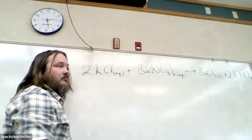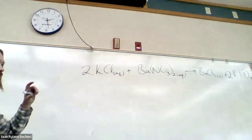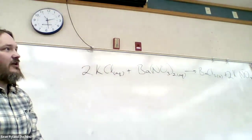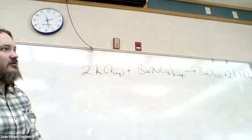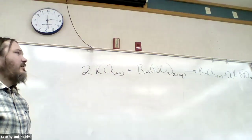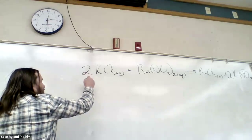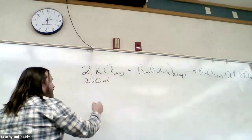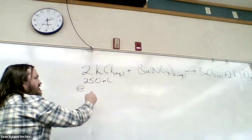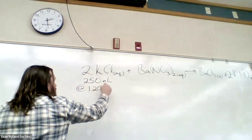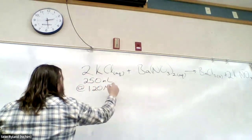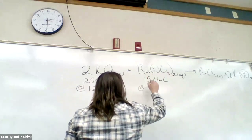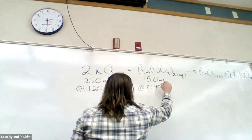Now that we have it written out, we can take the rest of the word problem. It says 25 mL of 1.2 molar KCl is added to 15 mL of 0.900 molar. So let's write it out the way we usually do these problems: 25.0 mL with concentrations given, and 15.0 mL at 0.900 molar.